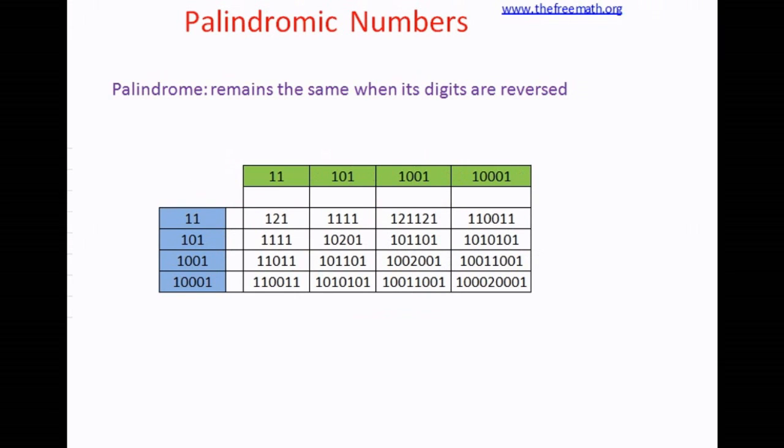Now look at this. Again, the numbers that we are going to multiply are all palindromes - 11, 101, 1001, 10001 - and the products are palindrome as well. Look at the product. If you multiply 11 by 101, you get 1111, and if you multiply 101 by 1001, you get 101101.